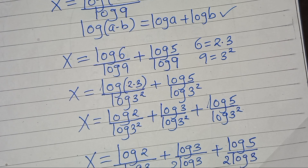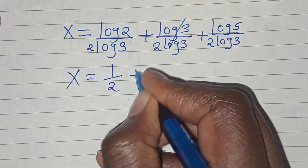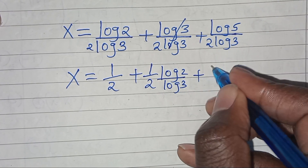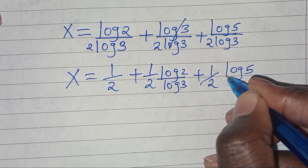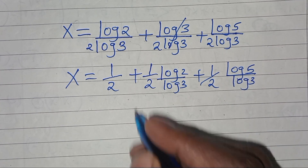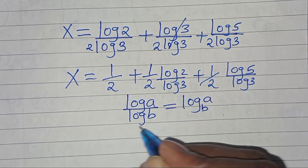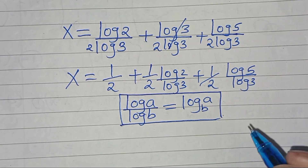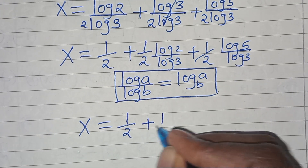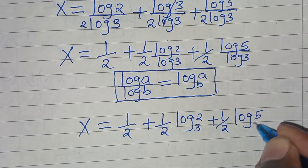Let's proceed and simplify. Canceling log 3 in the middle term, x equals log 2 divided by 2·log 3, plus one-half, plus log 5 divided by 2·log 3. Now, log 2 divided by log 3 and log 5 divided by log 3 are each in the form of log a divided by log b, which equals log base b of a. Applying the change-of-base property, x equals one-half plus one-half·log₃2, plus one-half·log₃5.